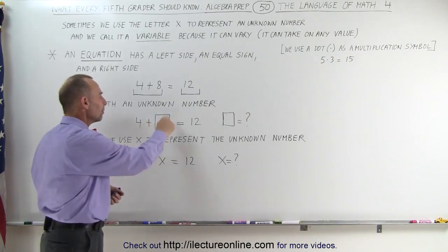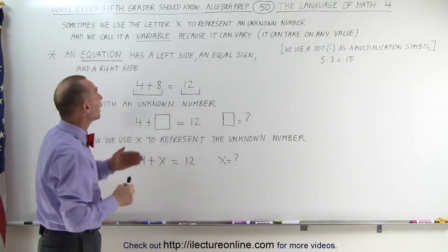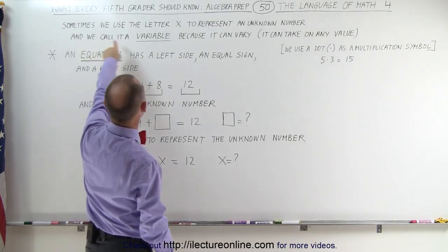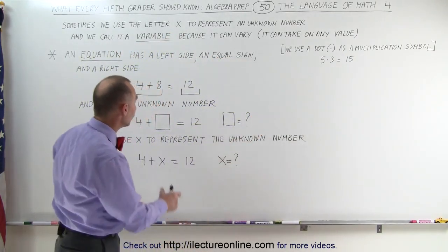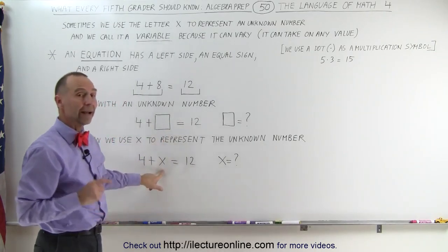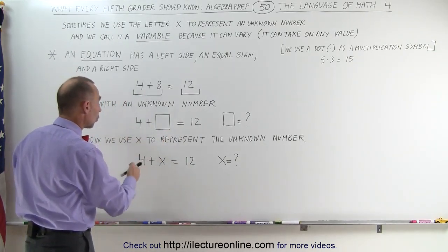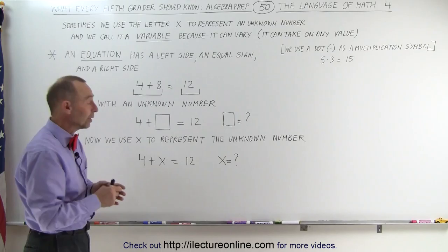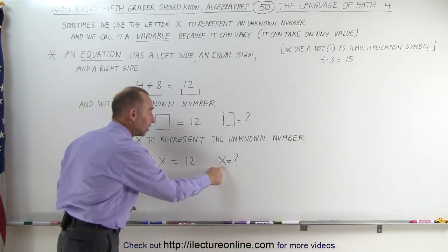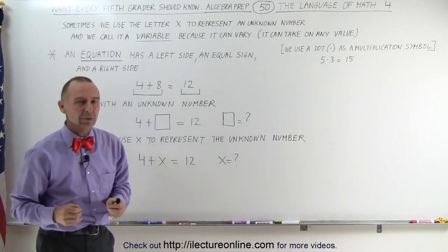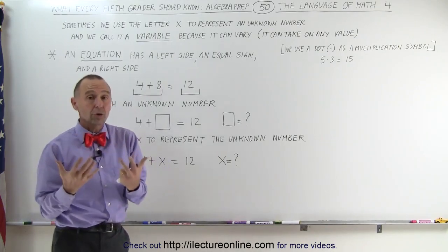Well, instead of using boxes like that, we let the letter X be that unknown number. So instead of using a box, we're going to use the letter X. So now this sentence or the equation is going to read as follows: Four plus X equals 12. And the objective is to figure out what that X is equal to. That X represents some unknown number, could be any number.